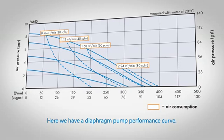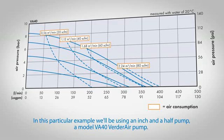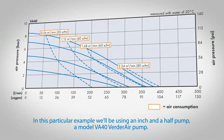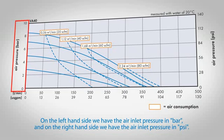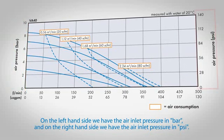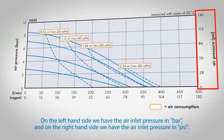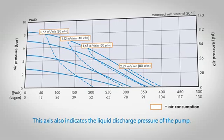Here we have a diaphragm pump performance curve. In this particular example, we'll be using an inch and a half pump, a model VA40 Verter Air pump. On the left hand side we have the air inlet pressure in bar, and on the right hand side we have the air inlet pressure in psi.